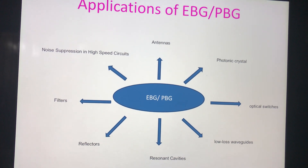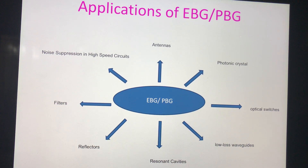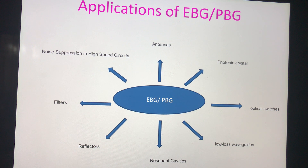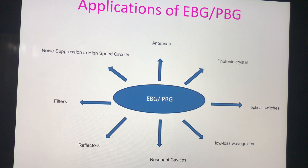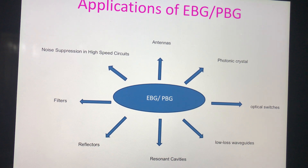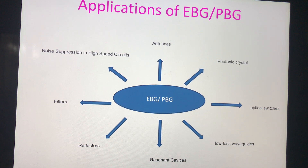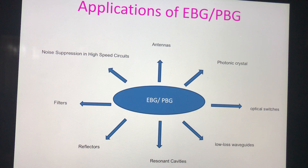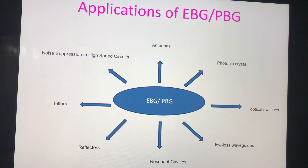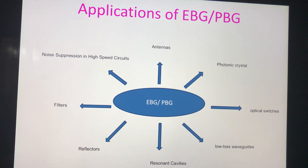The main applications of EBG structures include antennas, noise suppression in high-speed circuits, and signal integrity applications. They are also used as filters, reflectors, resonant cavities, and for creating low-loss waveguides. In the optical region, where they are referred to as PBG, a variety of applications have emerged including optical switches and photonic crystals.